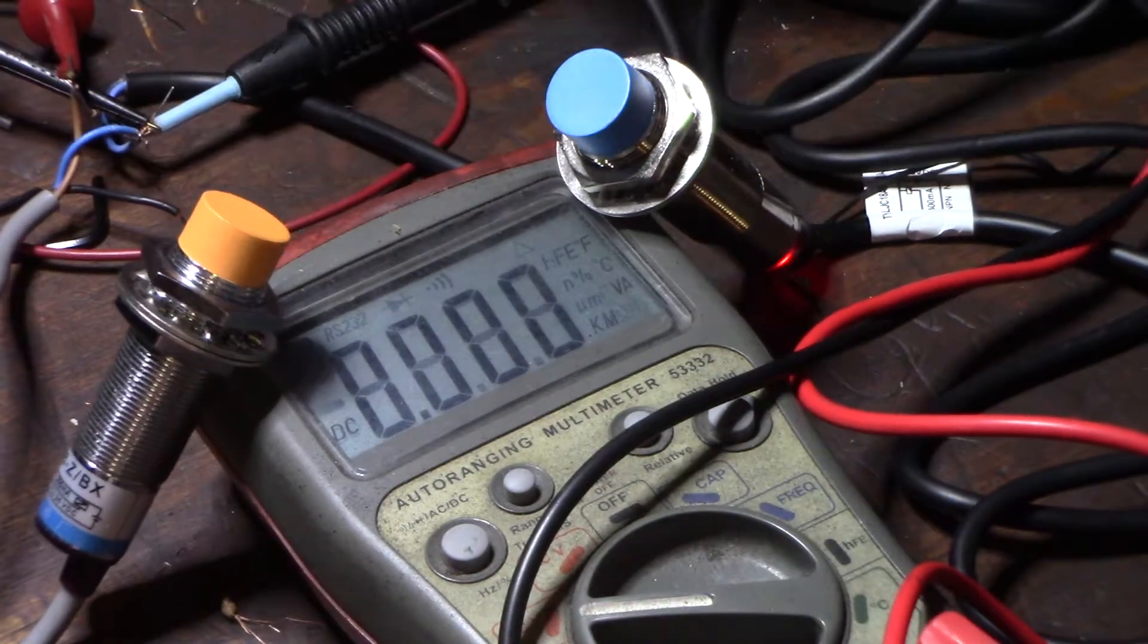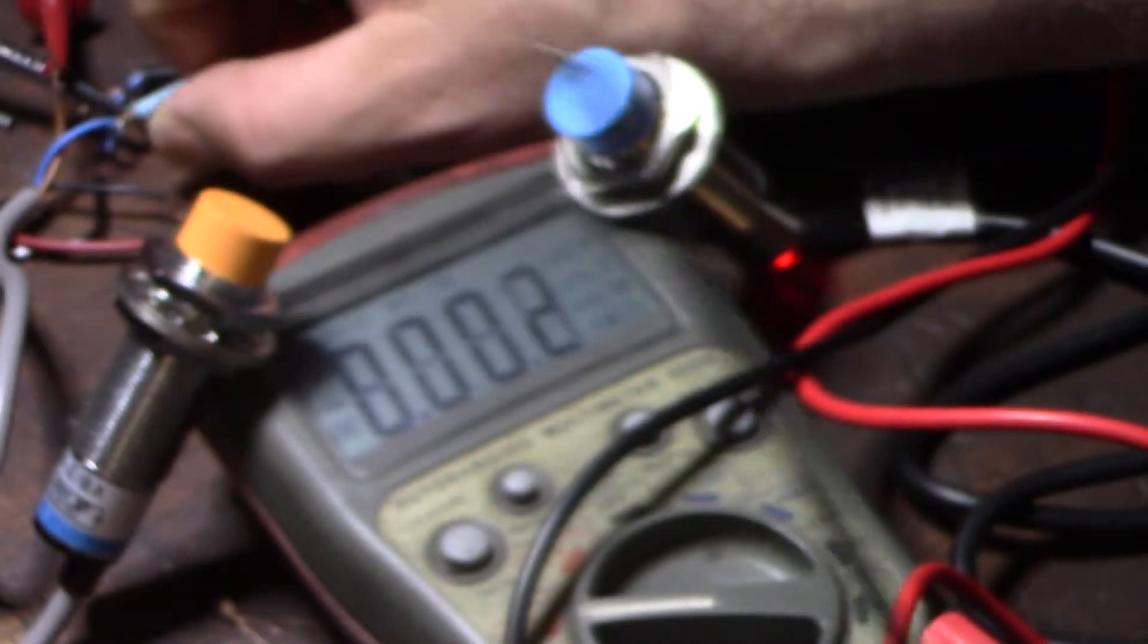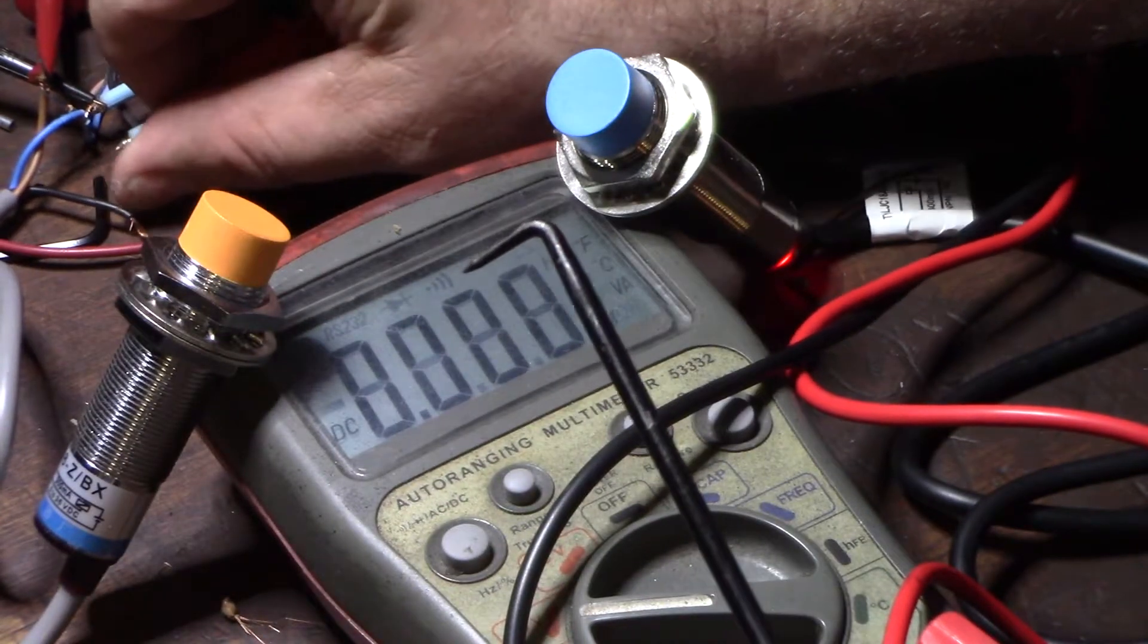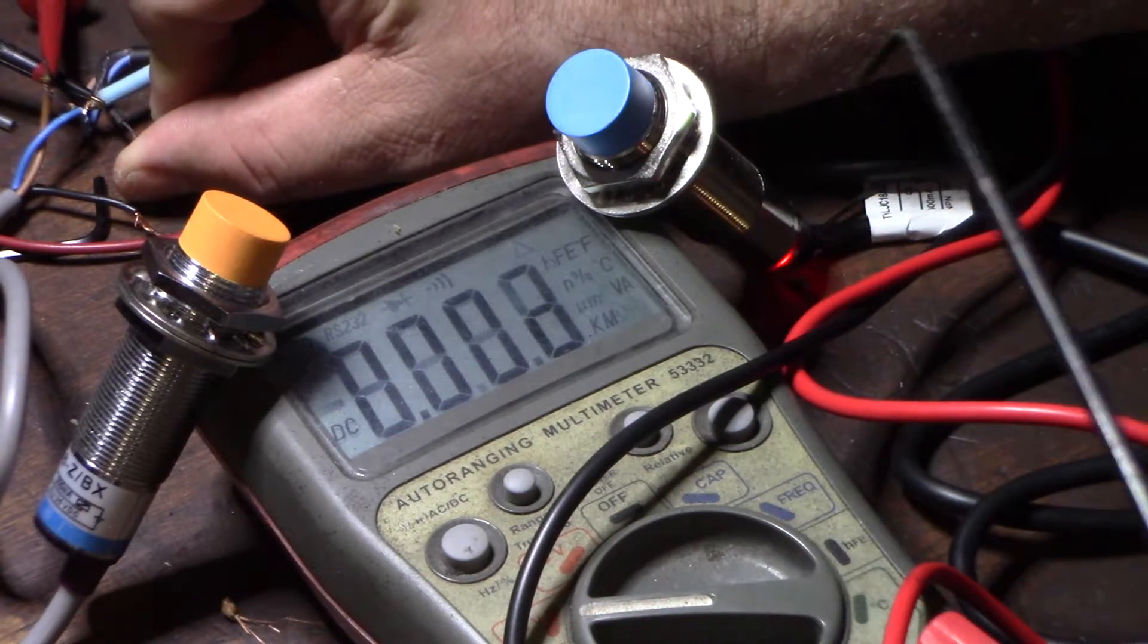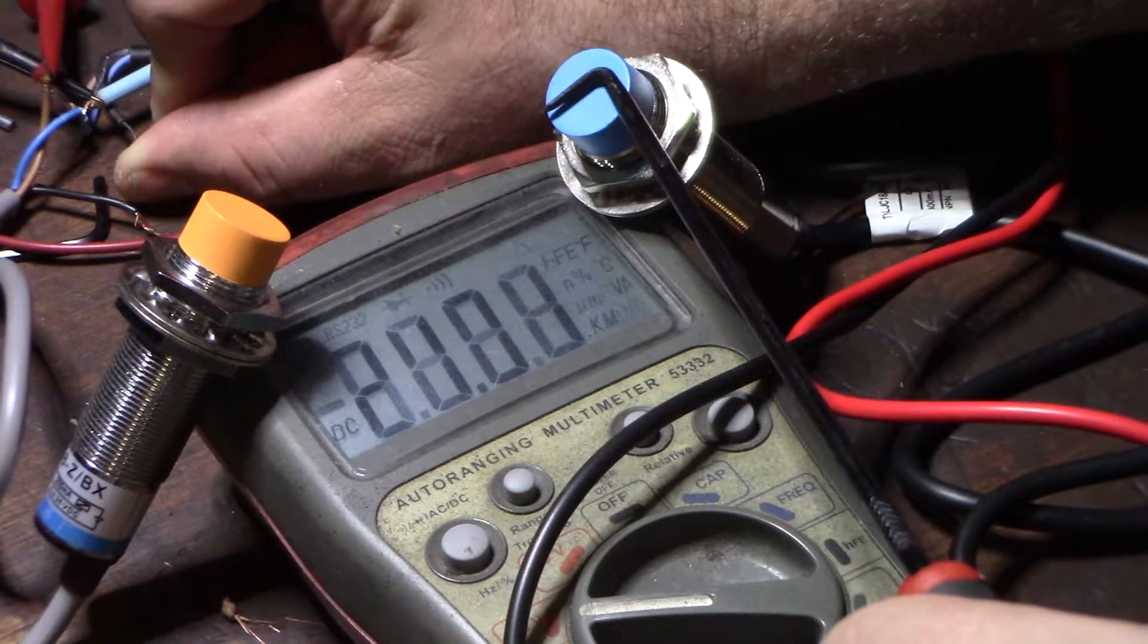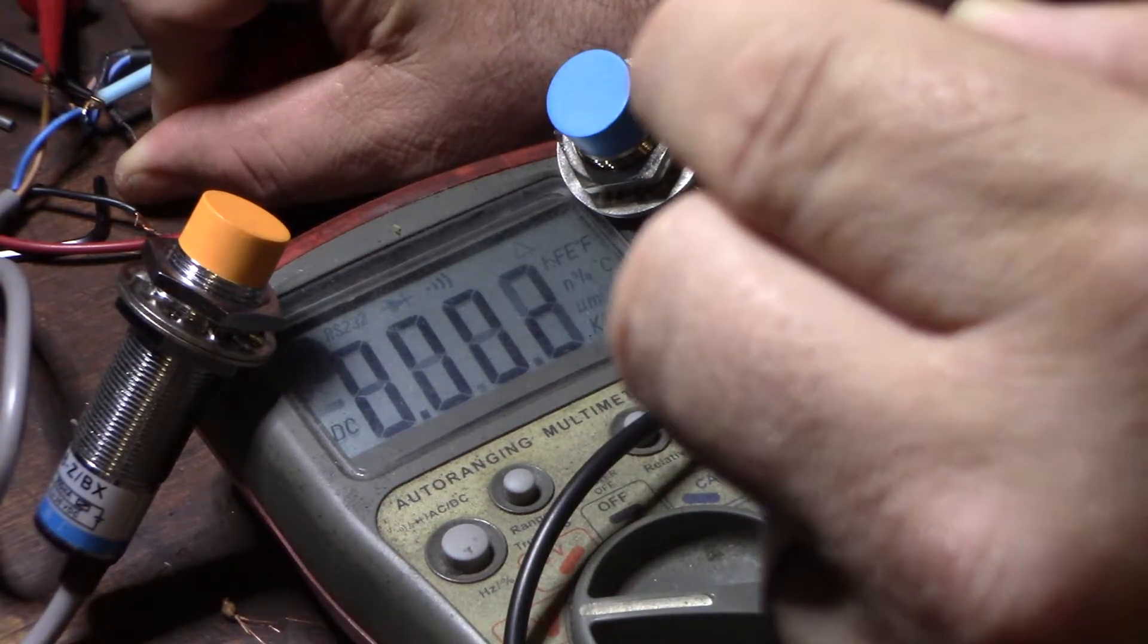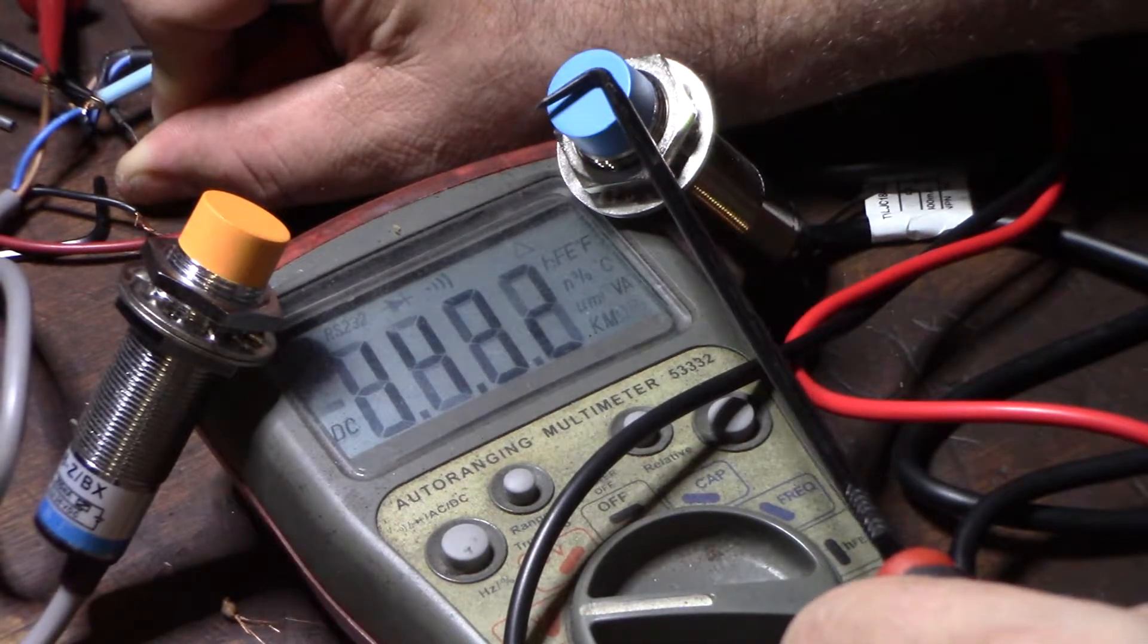But let me show you the normally closed sensor. I know I'm kind of rambling here. Okay, make sure I got this in there correctly. So right now this thing's unactivated and I'm getting 0 volts, right? So now I'm getting 14 volts. So when it's activated it sends back the trigger.